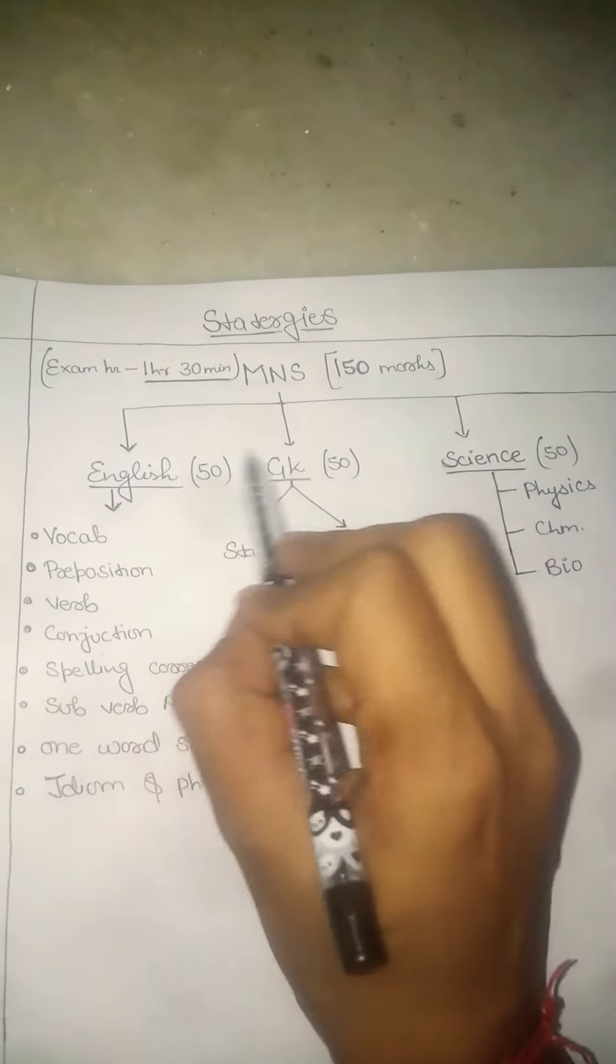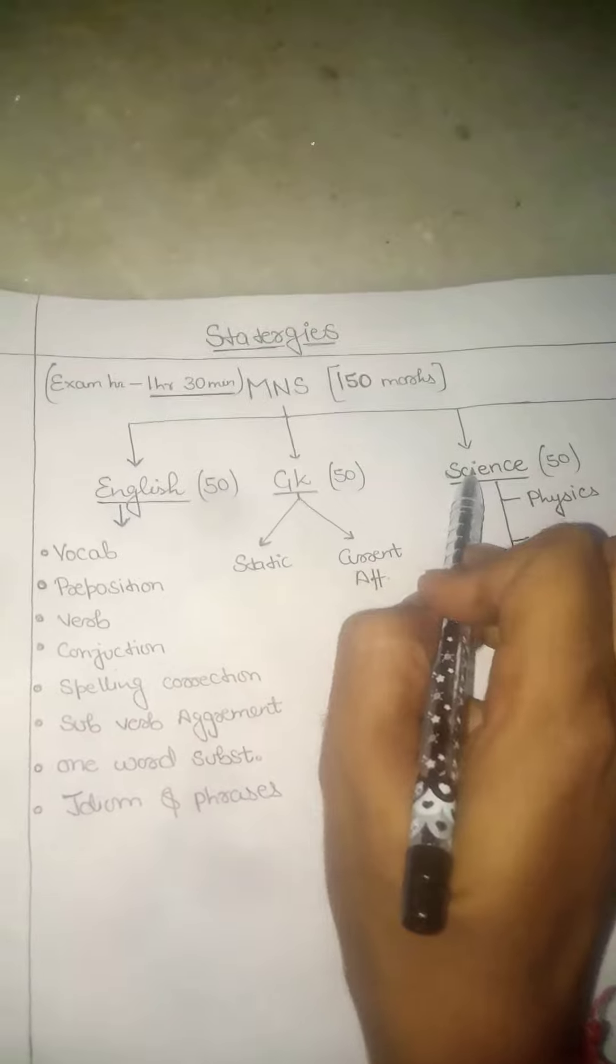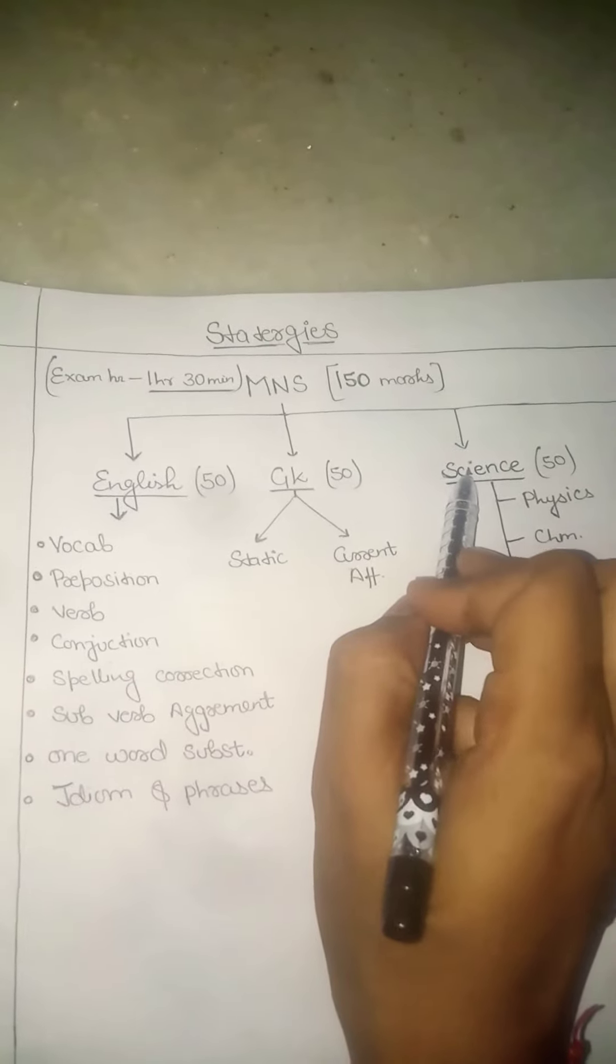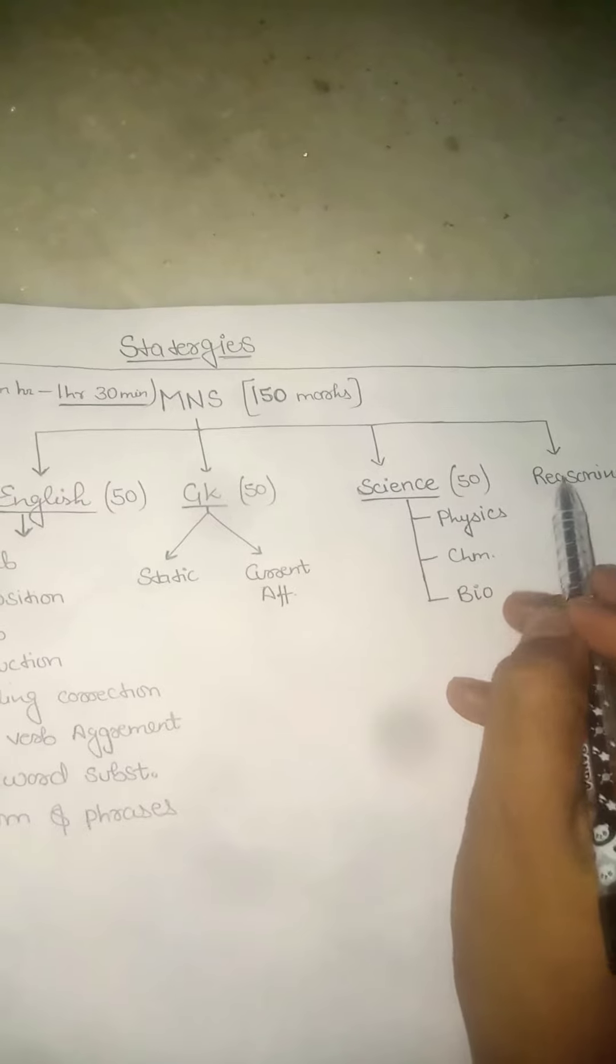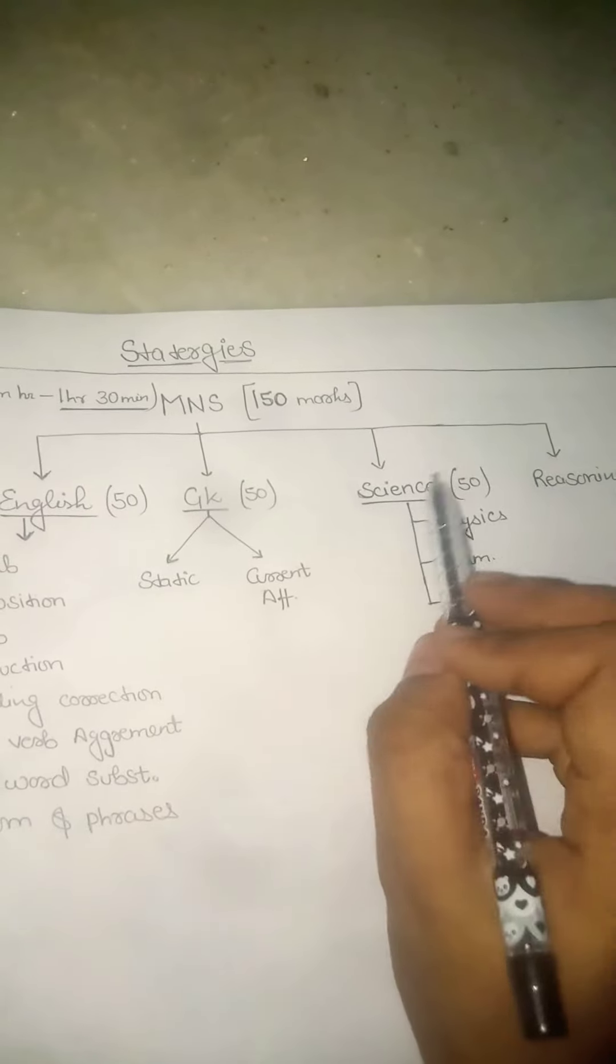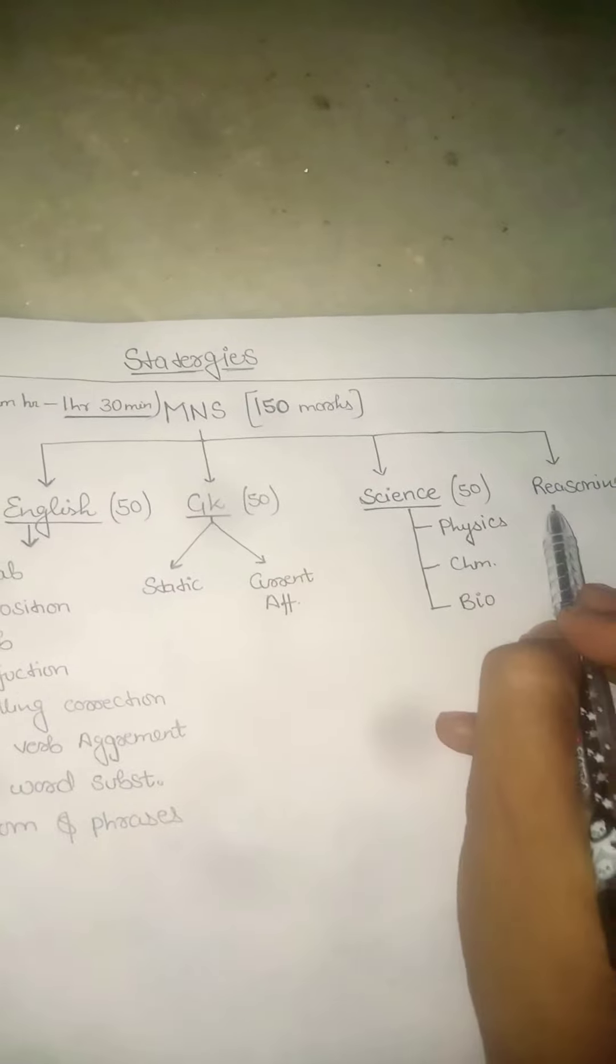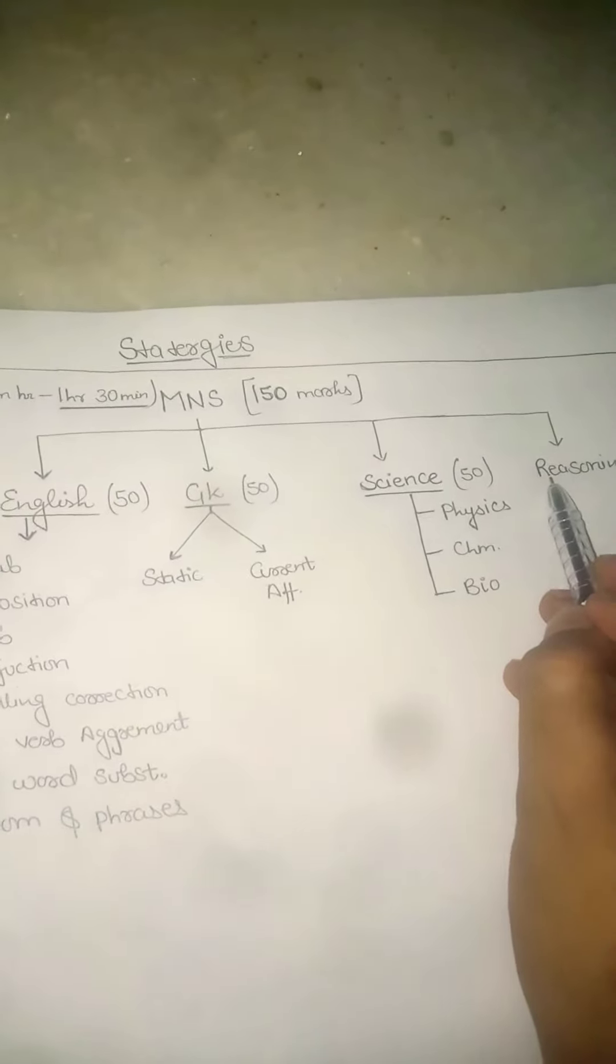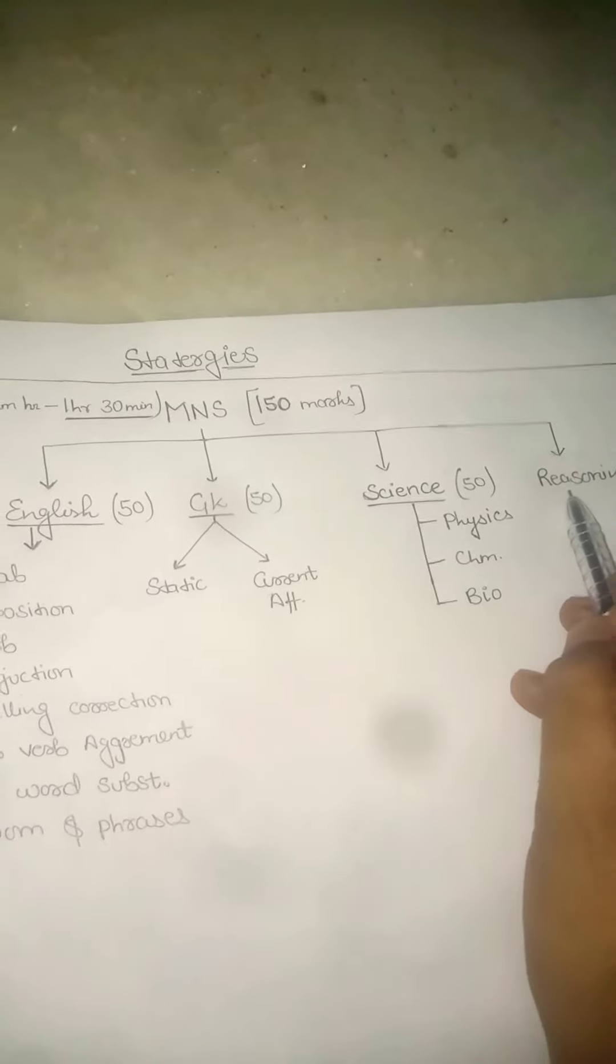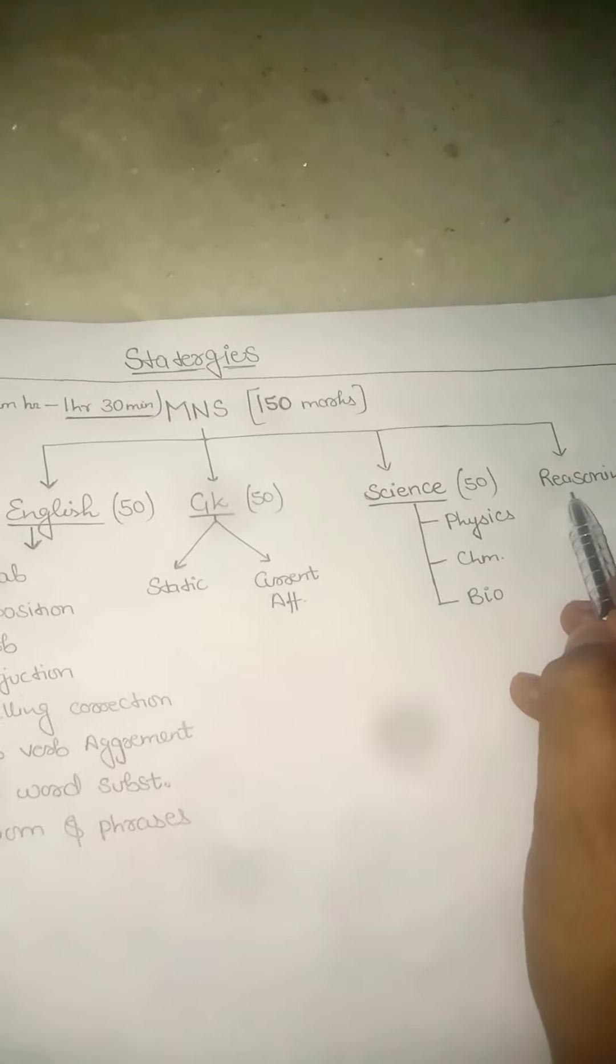The subjects are English, GK, and Science, divided by 50 marks each. I will not consider reasoning separately because every year the reasoning questions come in English and GK. We get 4 questions, so reasoning is very important. This is 1-4 marks.